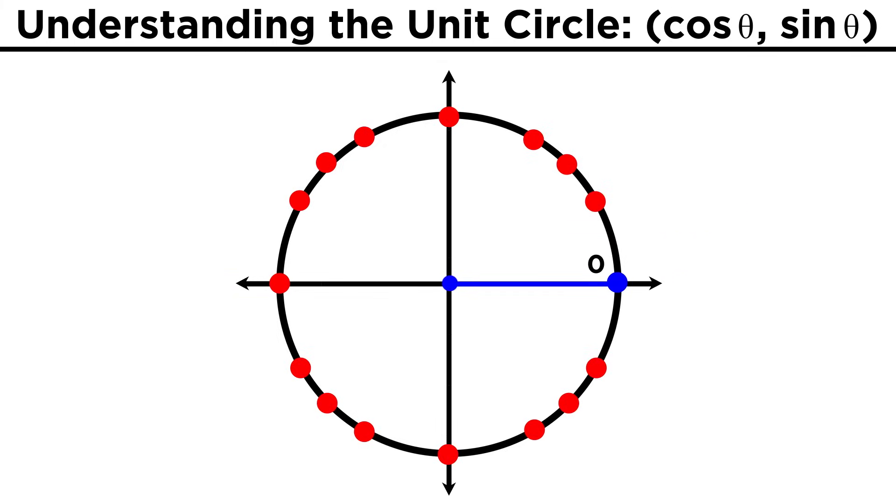Take zero as an example. There's no triangle, but since the radius of the circle is one, we know that the cosine of zero must be one, because the x-coordinate of this point is one. Likewise we know that the sine of zero must be zero, because the y-coordinate of this point is zero.